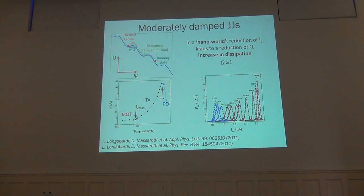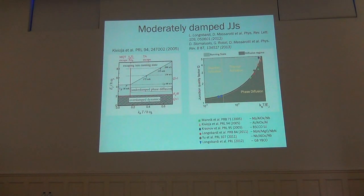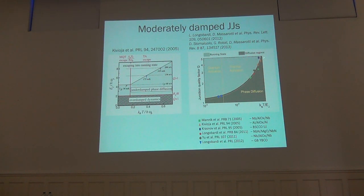The fingerprint of this regime is given by the striking collapse of sigma above the transition temperature. In the last ten years the moderately damped regime has been observed in many different types of Josephson junctions, and all the results can be described in terms of a phase diagram — in terms of fundamental quantities such as the Josephson energy, the thermal energy, and the junction quality factor Q.